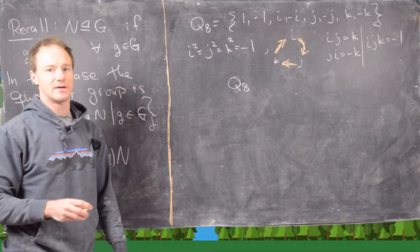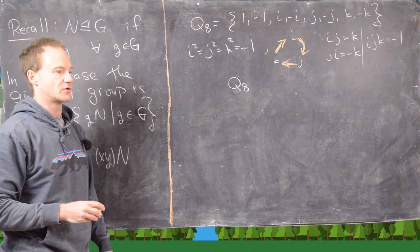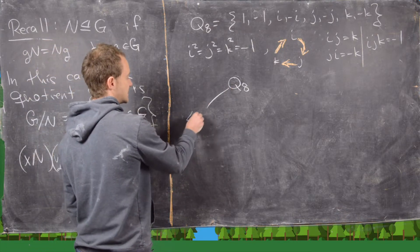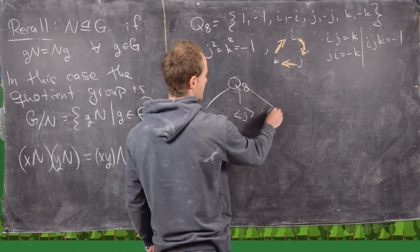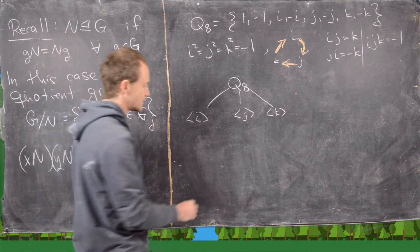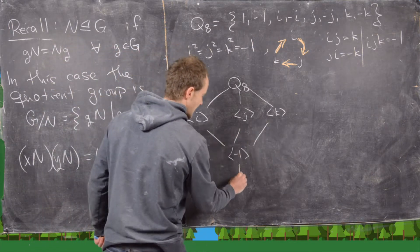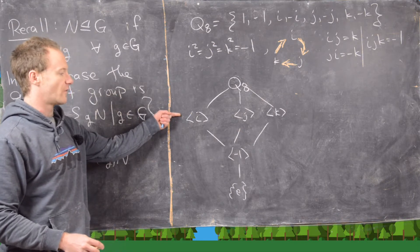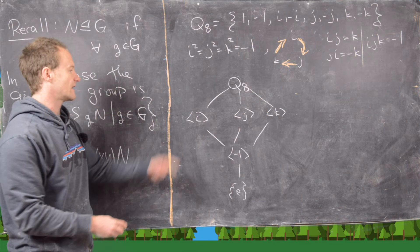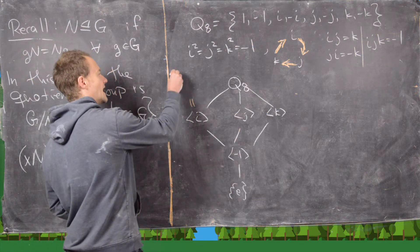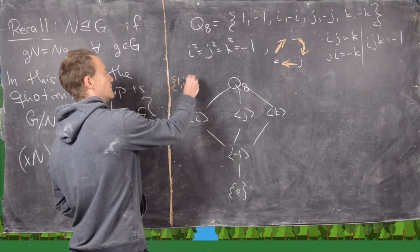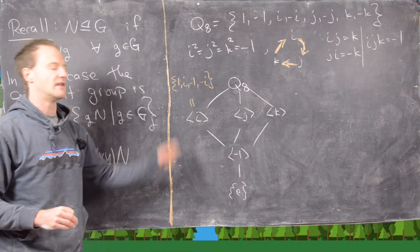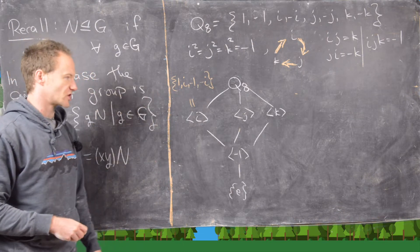Q8 has eight elements, so the possible orders of subgroups are 1, 2, and 4, since those are the divisors of 8. We get cyclic subgroups of order 4 generated by i, j, and k, a cyclic subgroup of order 2 generated by -1, and the trivial group of order 1. For example, ⟨i⟩ = {1, i, -1, -i}, corresponding to i⁰, i¹, i², i³, and then i⁴ = 1.